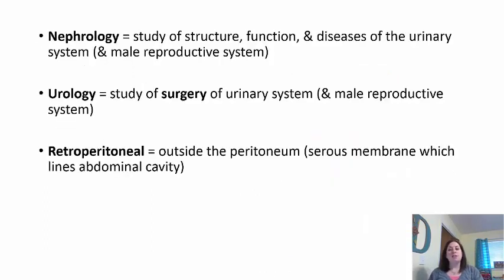Nephrology is the study of the structure, function, and disease of the urinary system, but it also covers the male reproductive system because they are closely tied together, unlike the female system. Urology is the study of the surgery of the urinary system as well as the male reproductive system. The kidneys are not covered by the peritoneum — they are retroperitoneal, meaning they are behind that membrane, outside of the peritoneum.